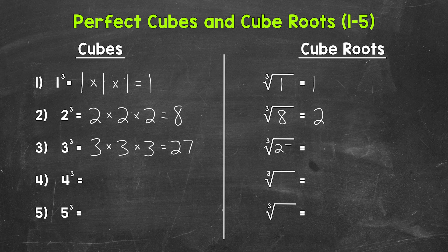That means that the cube root of twenty-seven equals three.